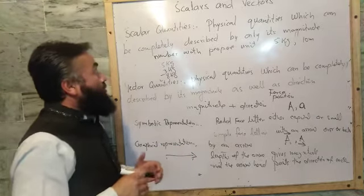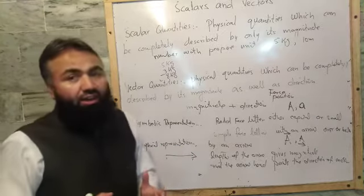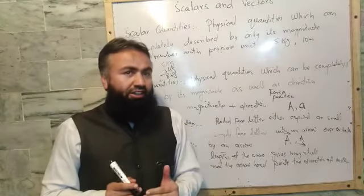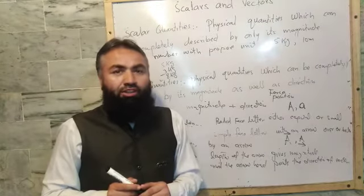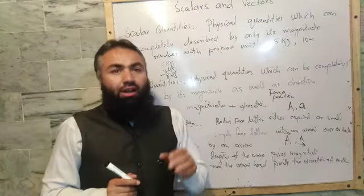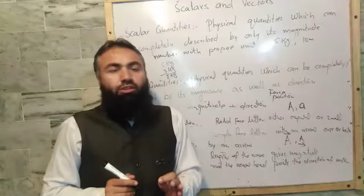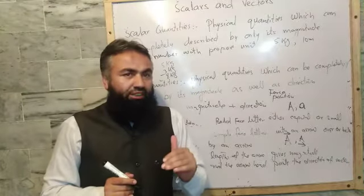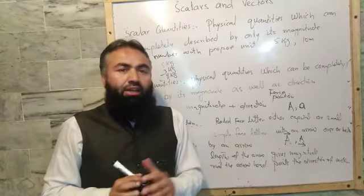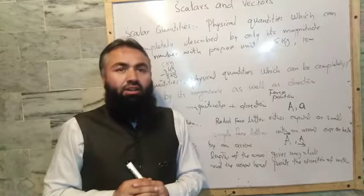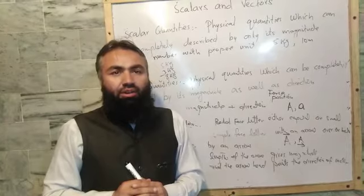So scalars are those quantities which can be completely described by their magnitude. And vectors are those quantities which need both magnitude as well as direction. Thank you and have a nice day.